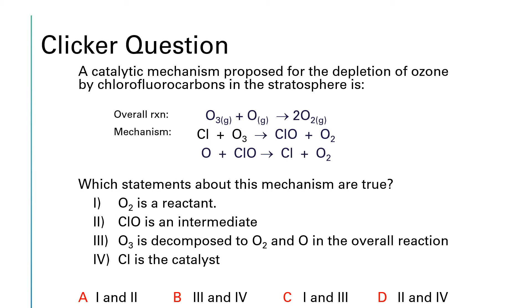Any time I'm looking at a Roman numeral question like this, I like to analyze each statement individually, statements one through four, before I look down at the answer choices. So that way I'm not having to analyze the same thing more than once. So the first one says that O2 is a reactant. Well, to answer that, we need to look at our overall reaction. And in our overall reaction, O2 is actually a product, so that one is not correct.